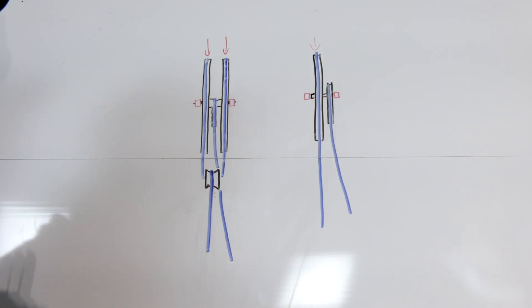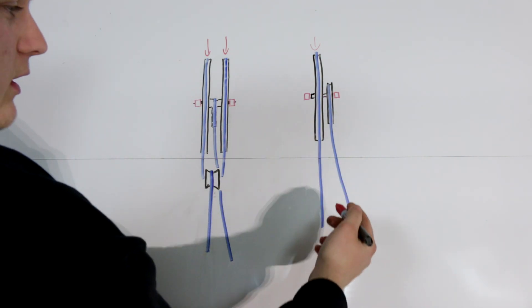So as you draw that bow back, the reason we have let off is because you're holding on to the bow string and that weight from those limbs being flexed transfers over to your cables. Now your cables don't pull straight down like your bow string does. They actually pull off to the side.